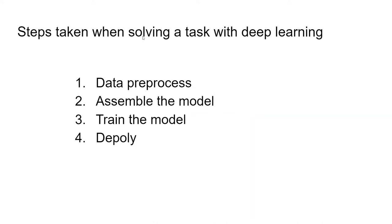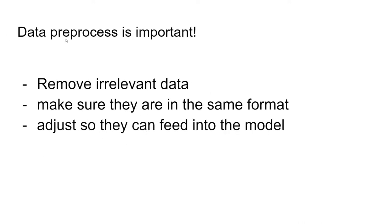The steps taken when solving a task with deep learning are almost the same as machine learning. Before we even start putting the model together, we have to pre-process all the data needed to train the model. After that, based on the nature of the task, we assemble, train and deploy the model. Data pre-processing is very important — how well the model performs largely depends on the quality of the training data. We collect, clean and format the data into the shapes and sizes we want.